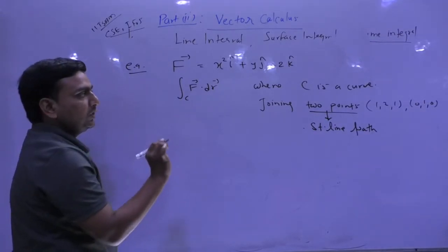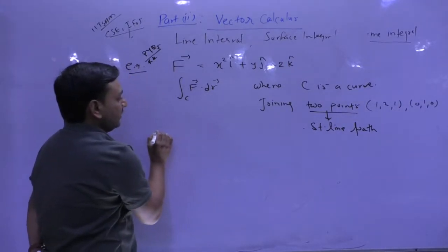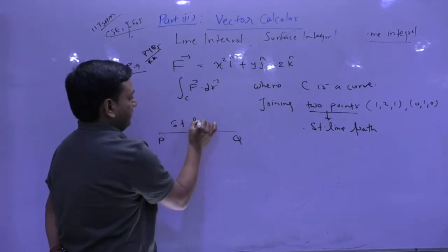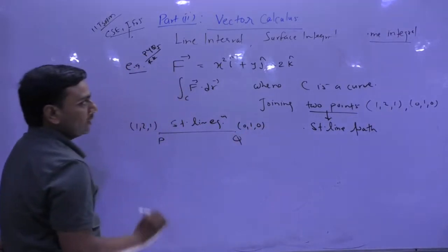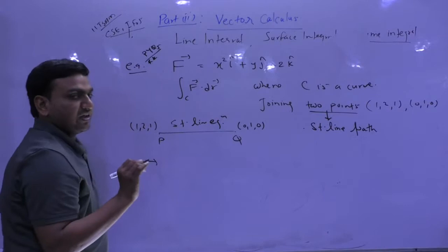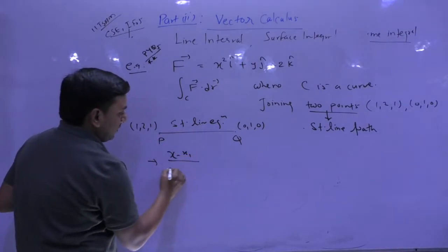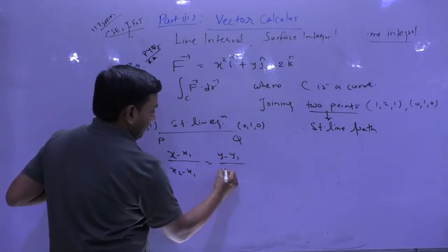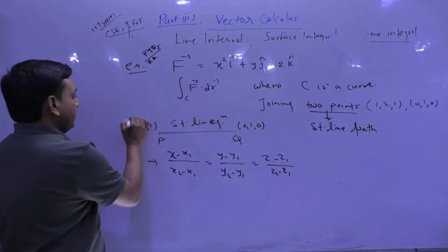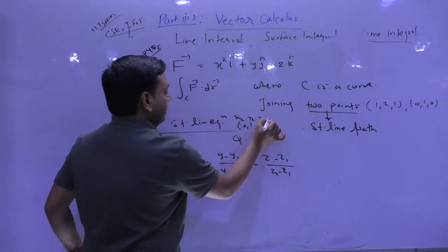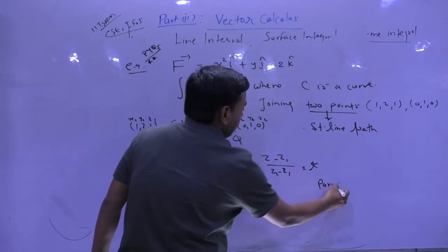For the straight line in 3D, we use the symmetrical form. The equation of a straight line is given by (x−x₁)/(x₂−x₁) = (y−y₁)/(y₂−y₁) = (z−z₁)/(z₂−z₁). What we do then is parametrization — please mark star here. We set all these quantities equal to some parameter t. This reduces everything to one parameter.